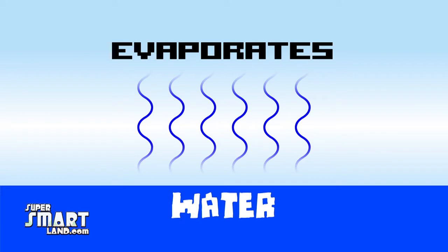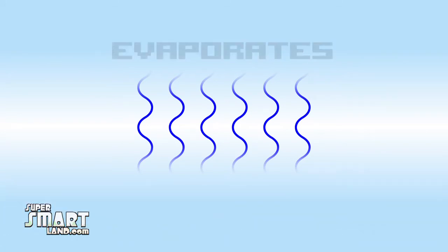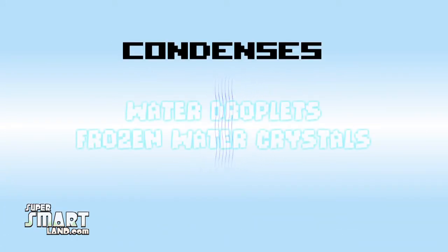When water becomes warm enough, it evaporates as vapor into the air. When this water quickly cools, the water vapor condenses into clusters of water droplets and frozen water crystals.